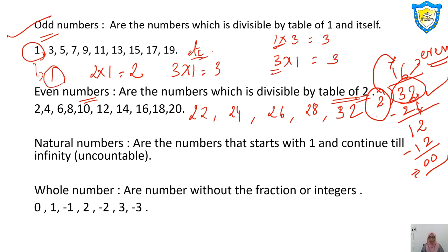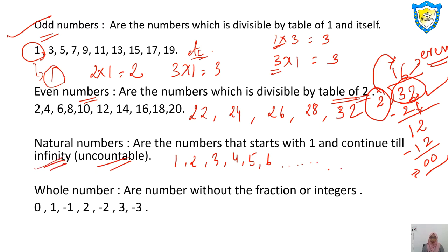Natural numbers start from 1 and continue to infinity — 1, 2, 3, 4, 5, 6, 7, 8, and so on, continuing to ten thousand, lakh, crore, ten crore, and infinity. Numbers that start from 1 and go to infinity are known as natural numbers.